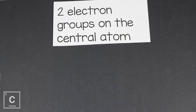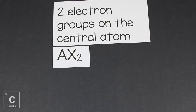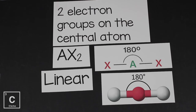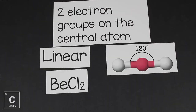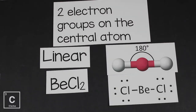Now we've got two electron groups bonded to the central atom — general formula AX2. We have two elements bonded to the central atom, and this is going to make a linear molecule. A real example: beryllium dichloride. Beryllium is the central atom, and two chlorines are bonded to it. This shape is linear, and we show that with 180 degrees.